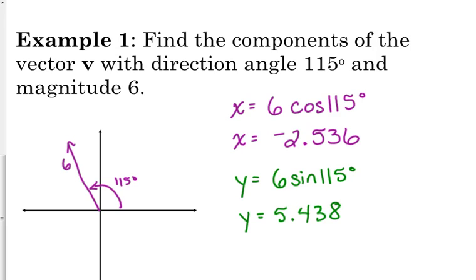So, in component form, we would write it like this. And, again, it checks out. The x component is negative, the y component is positive, and the y component is larger. There's more of a vertical component than there is horizontal. Which makes sense.